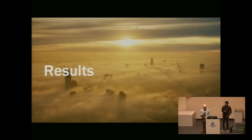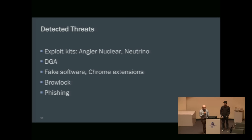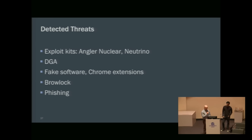Now for the results. The types of attacks we catch include current exploit kits like Angler, Nuclear, and Neutrino; a lot of DGAs; fake software like Chrome extensions and plug-ins; spyware and scareware executables; browser-based ransomware; and a lot of phishing campaigns. There's also another piece of the study: recording and documenting the hosting patterns of these malicious domains. Thomas mentioned the ground truth problem based on past history, but following how bad guys establish their infrastructures gives additional intelligence on how they operate.